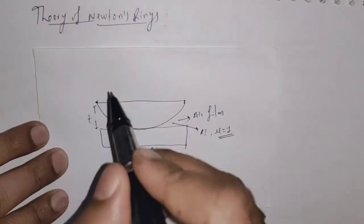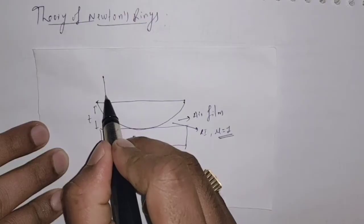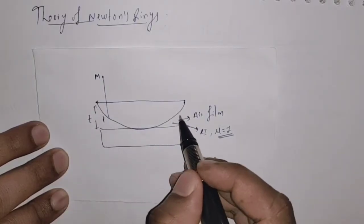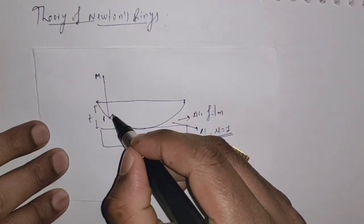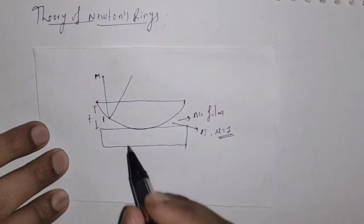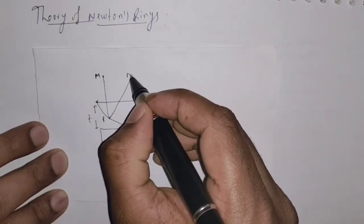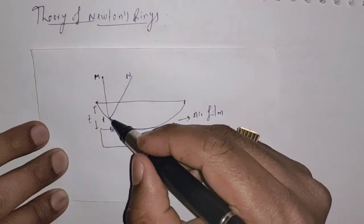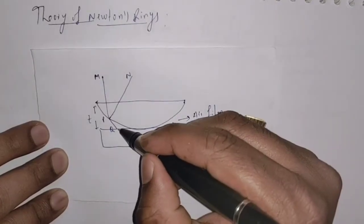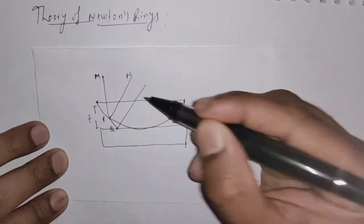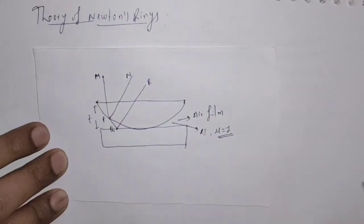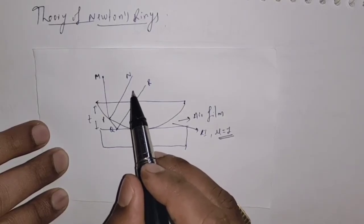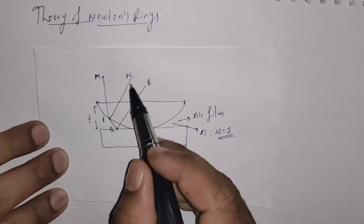Let us suppose a light ray M, P incident on the lower surface of the plano-convex lens. Then some part of it gets reflected — I am going to denote it by P, N — and some part of it gets transmitted, that is P, Q. We are going to write the condition for bright and dark fringes in the case of reflected light.